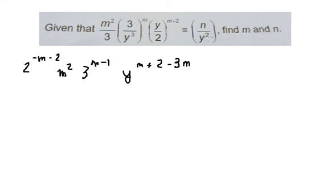On the right we can see that this equals y to the power of negative 2. So we have y and y, that means the power should be equal. So we have m plus 2 minus 3m equals negative 2.